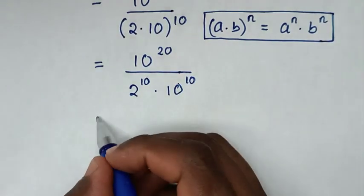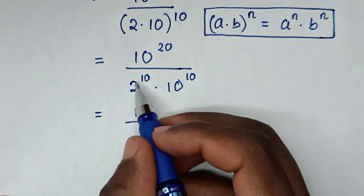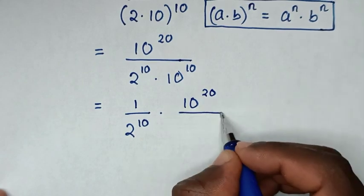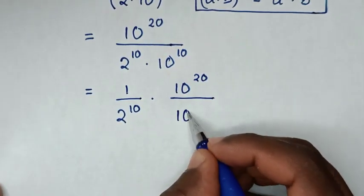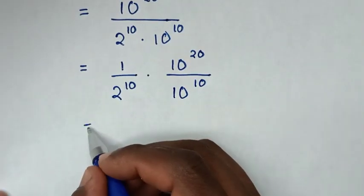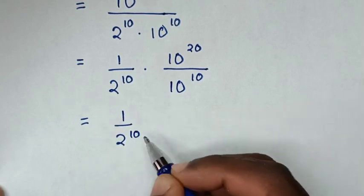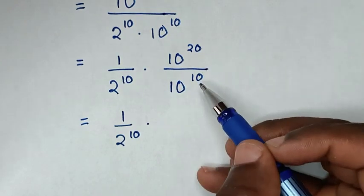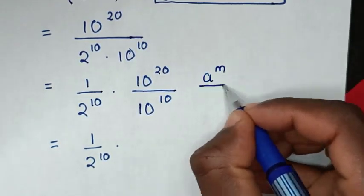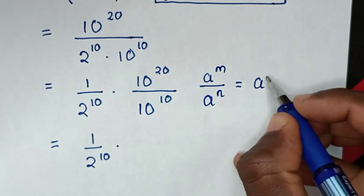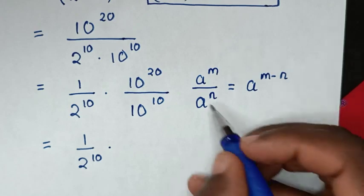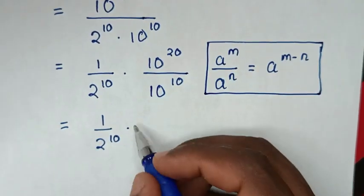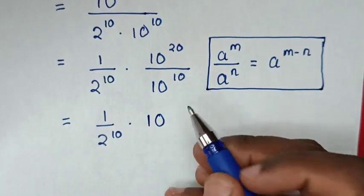Then in the next step, it will be equal to 1 over 2 power of 10, times 10 power of 20 over 10 power of 10. Then it will be equal to 1 over 2 power of 10, times — in here, the division of exponents 10 power 20 over 10 power 10 is in the form of a power of m over a power of n, which equals a power of (m minus n). So it will be same base of 10, power of 20 minus 10, which is 10.